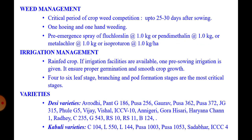Deshi varieties include Annigeri (which is also resistant to wilt), Panth G186, Pusa 256, Gaurav, Pusa, MPKV Rahuri, Phule G5, Vijay and Vishal, among many others. For Kabuli varieties: C104, L550, L1444, Pusa 1003, Pusa 1053, Sada Bahar and ICCC 4. These are the important varieties of Bengal Gram.